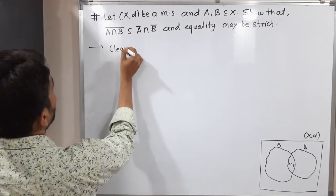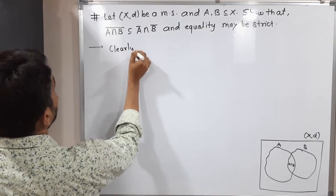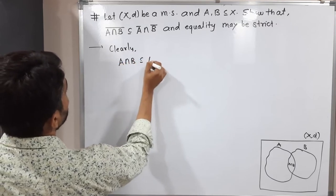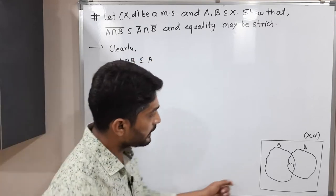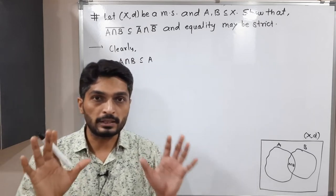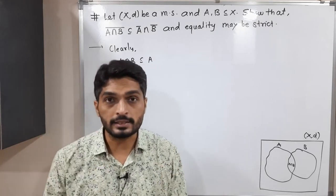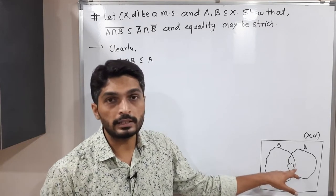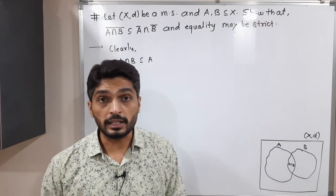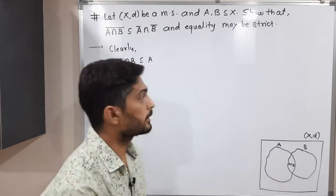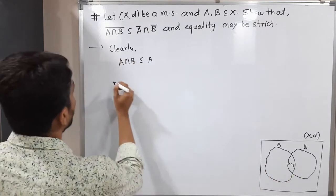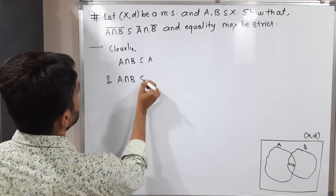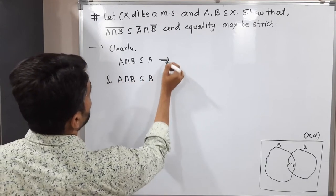So clearly, one thing we can write: A intersection B is a subset of A. In this diagram, you can easily see that A and B are any two sets and A intersection B is here, so clearly it is a subset of A. Similarly, A intersection B is also a subset of B.